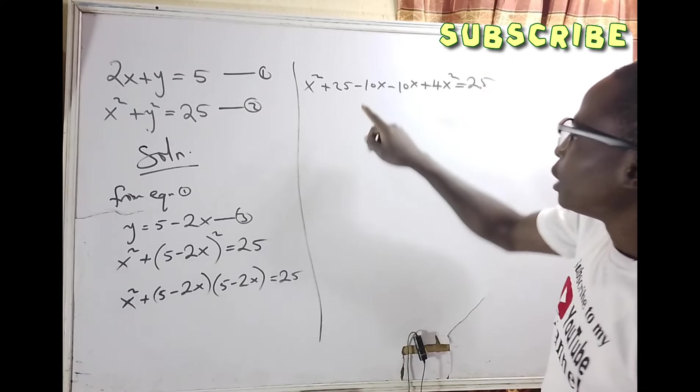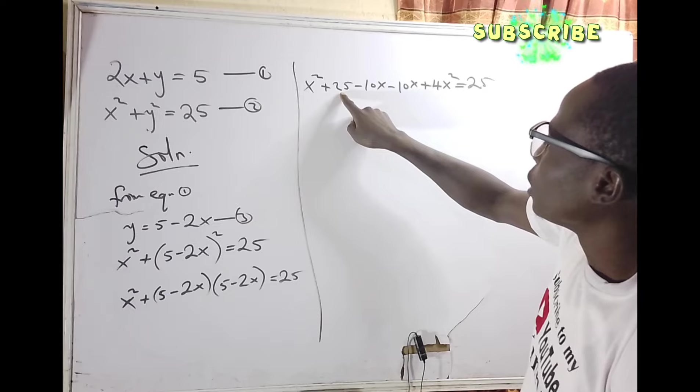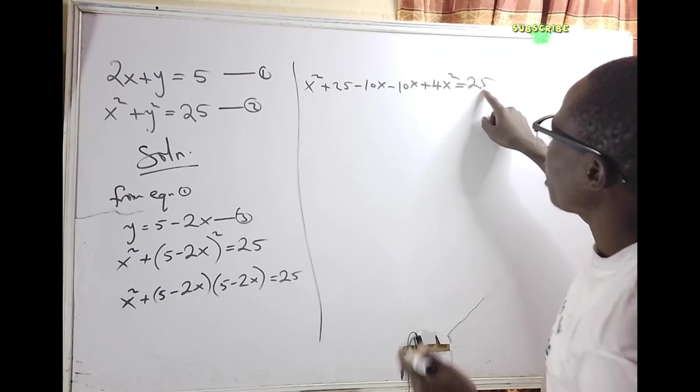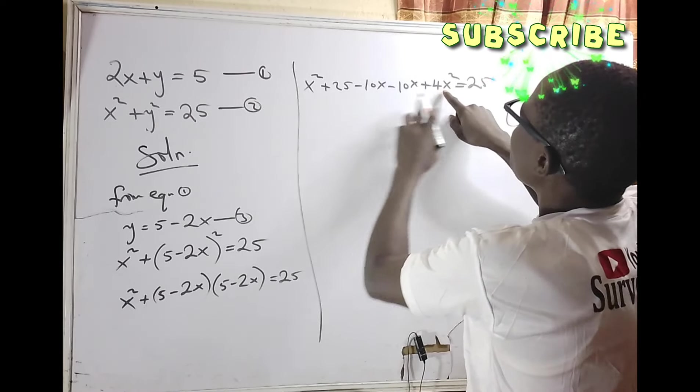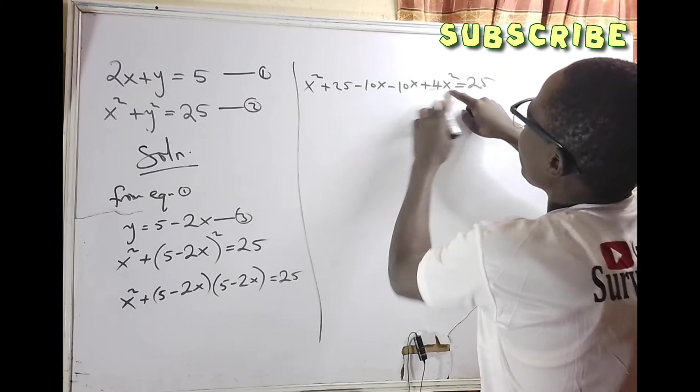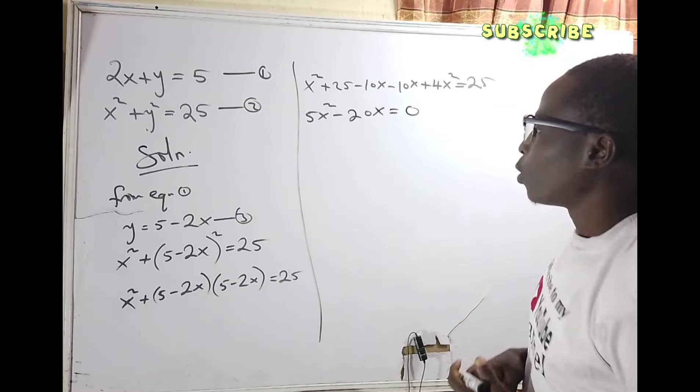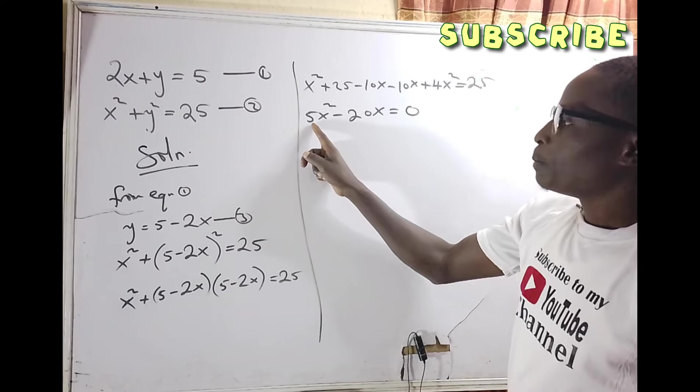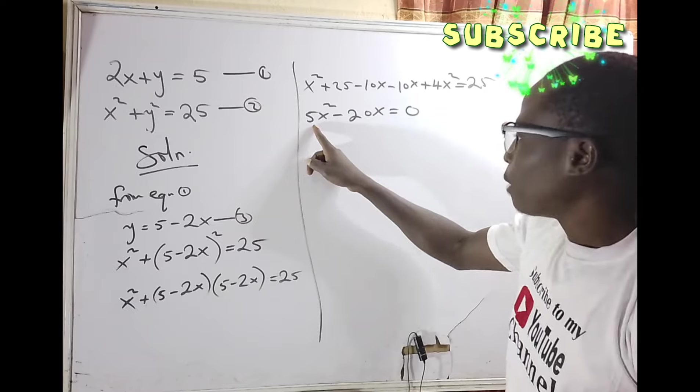I know that this 25 will cancel with this 25. So x squared plus 4x squared minus... Actually, let me work through this expansion properly.